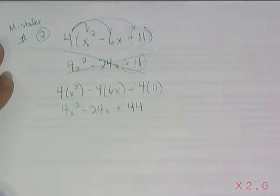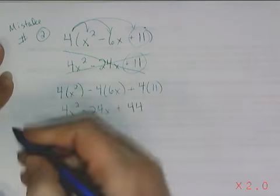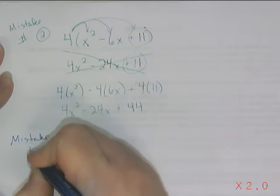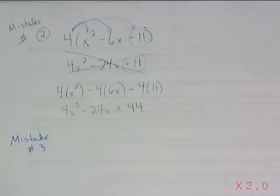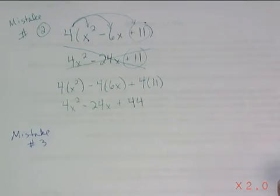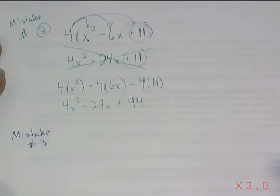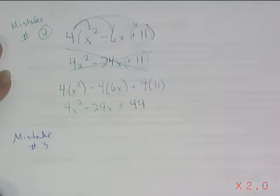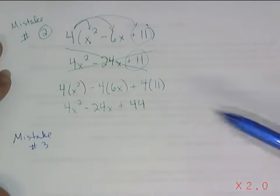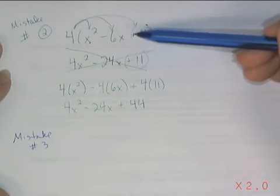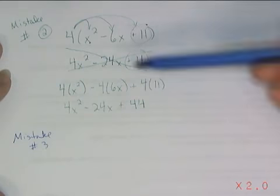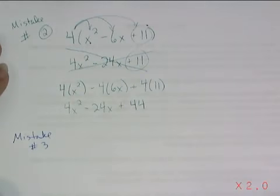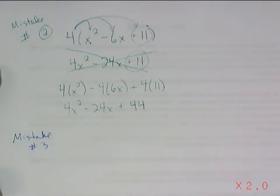Mistake number 3 was making a mistake with your plus and minus signs. That's pretty common. So far, all of our distributive property work has been pretty easy because the term that we've been distributing has always been positive. So it's been very easy for us to copy our plus and minus signs from within the grouping as we continue our work. And as long as this monomial out in front of the parentheses is positive, you can keep doing that.